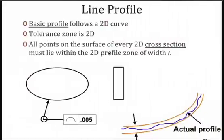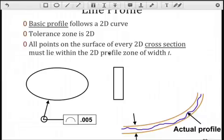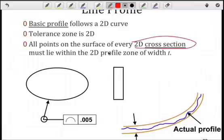Let's look at the simple 2D case, what we call the line profile. It will be a two-dimensional curve that you're controlling, and it's going to be every two-dimensional cross-section. So, here we have our oval shape. We know what the basic profile is, and the all-around indication is redundant in this case since we have a continuous curve.